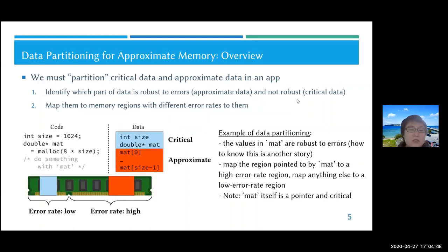If you think about using this approximate memory from software, we have to partition critical data and approximate data in an application. Critical data means data that is not robust to errors, and approximate data means data that is robust to errors.